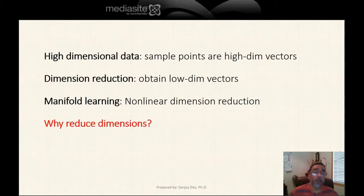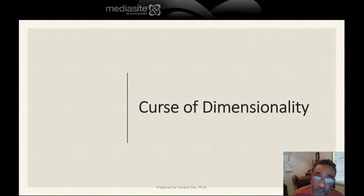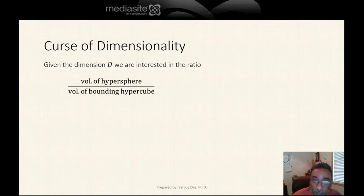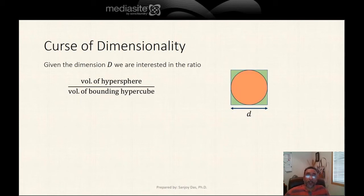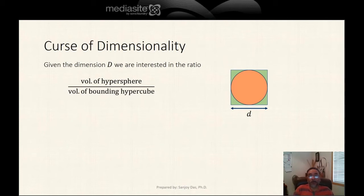Why do we need to reduce the number of dimensions? The answer is the curse of dimensionality. The curse of dimensionality is illustrated by this example. Let's say the number of dimensions is uppercase D, and what we are interested in is the ratio of a hypersphere in D dimensions to the volume of the bounding hypercube. In two dimensions, the hypersphere is a red circle and the bounding hypercube is a green square, and D is a parameter that depicts the size of both.